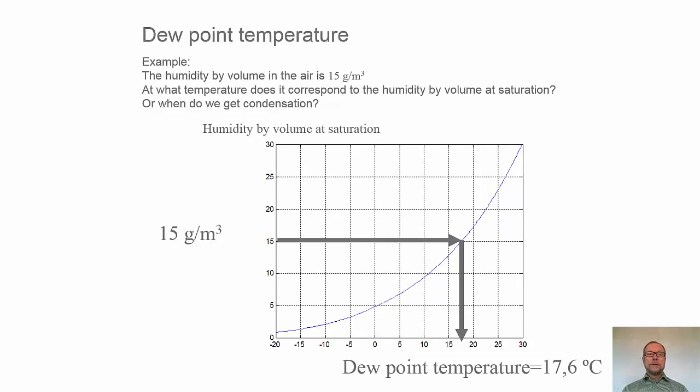The concept of dew point temperature. In the previous slide we saw that the water vapor condensated on the glass surfaces when it was sufficiently cold. And we can use this humidity by volume at saturation curve to determine when a certain volume of air with a certain humidity by volume will have condensation. So then we use the diagram from the other direction.